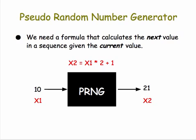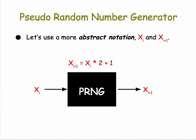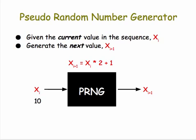Let's generalize our formula a little bit. We'll make the notation a little more abstract. We'll let x sub i stand for the current number and x sub i plus 1, the next number. So if x sub i is 10, then x sub i plus 1 is 10 times 2 plus 1, which is 21.